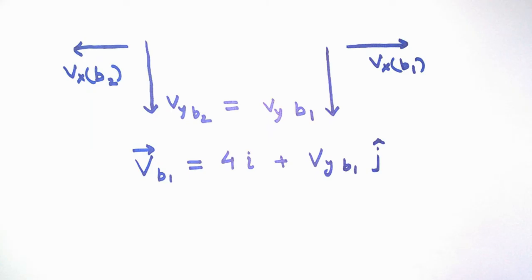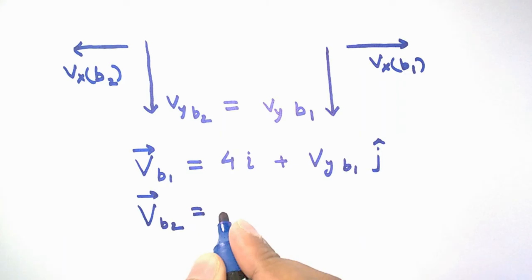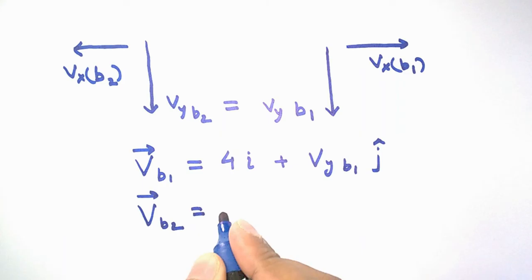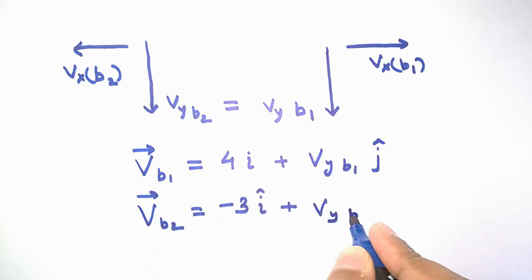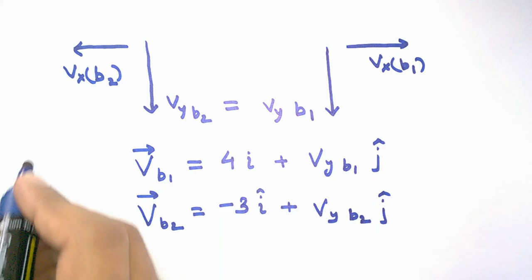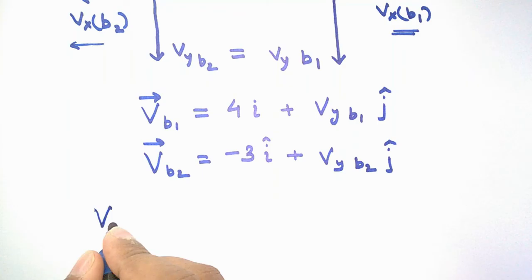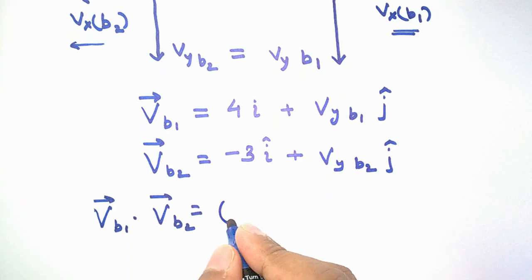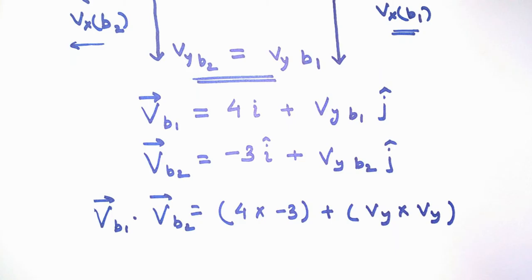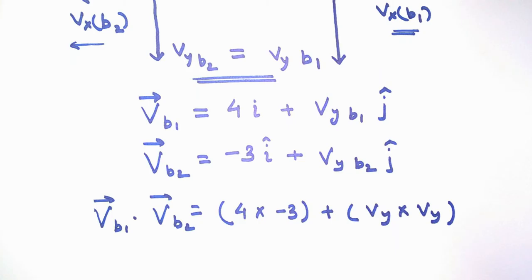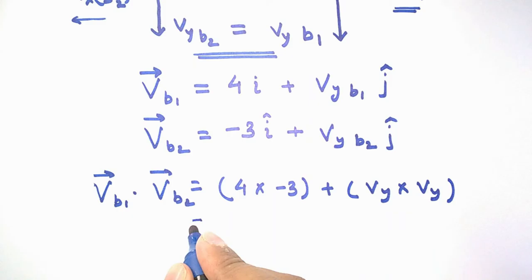We assume the horizontal direction to be the x-axis and the vertical direction to be the y-axis, giving us a two-dimensional plane. The velocity vectors for both balls at the time when they are perpendicular to each other can be written as follows. One of the velocities along the horizontal direction should be taken as negative since one ball moves opposite to the other horizontally, whereas in the vertical direction both are going downward, so the sign choice there does not affect the result.